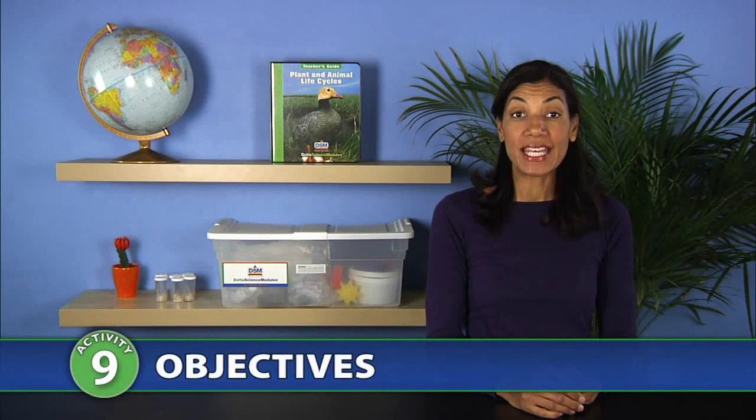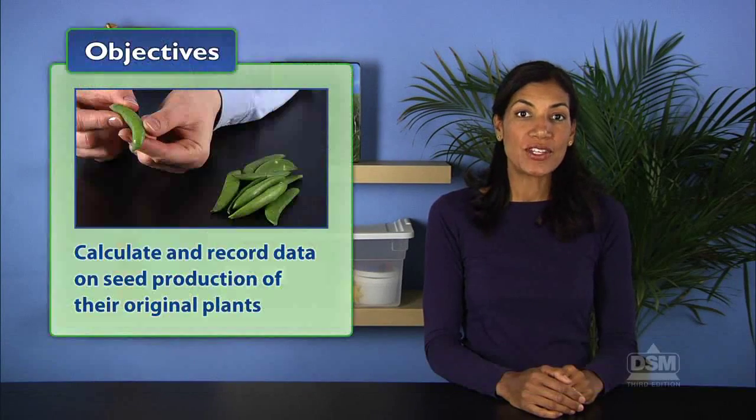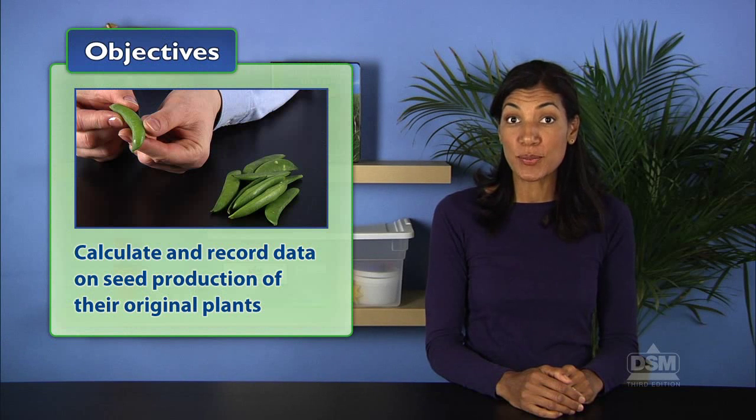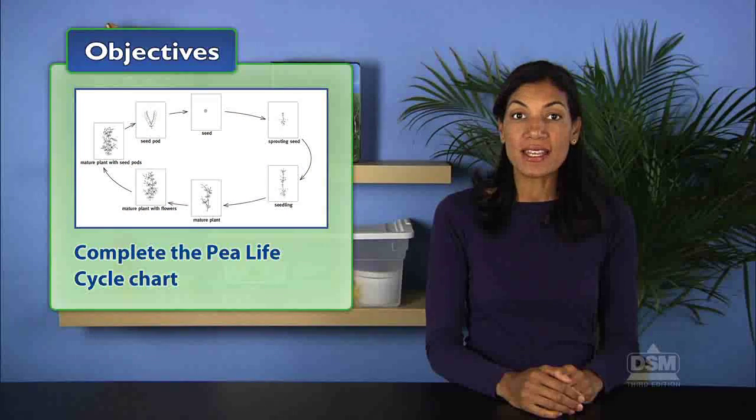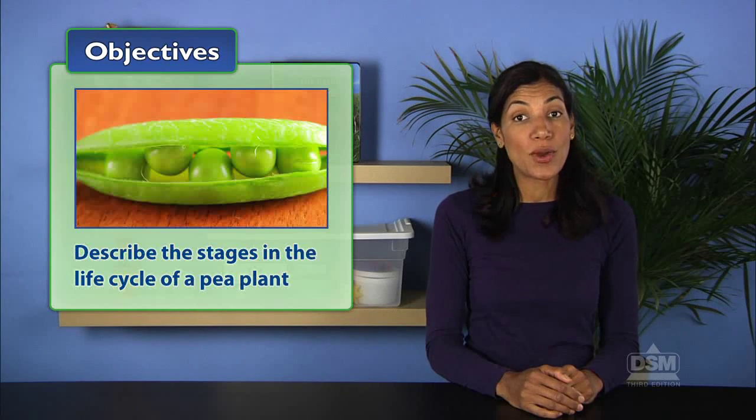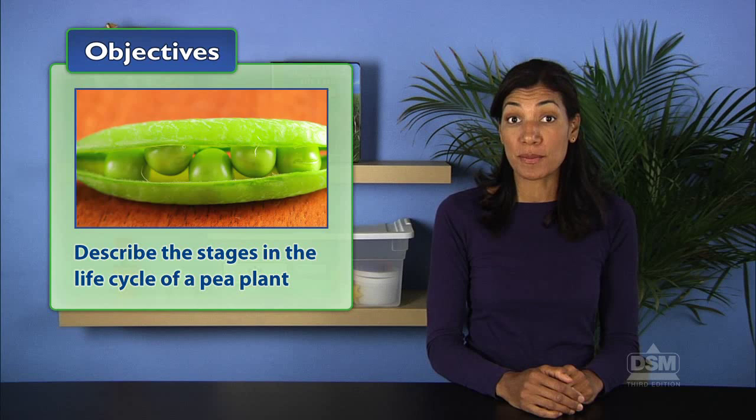In Activity 9, Plant Lifecycle, students calculate and record data on seed production of their original plants. The students first complete the pea life cycle chart, then describe the stages in the life cycle of a pea plant.